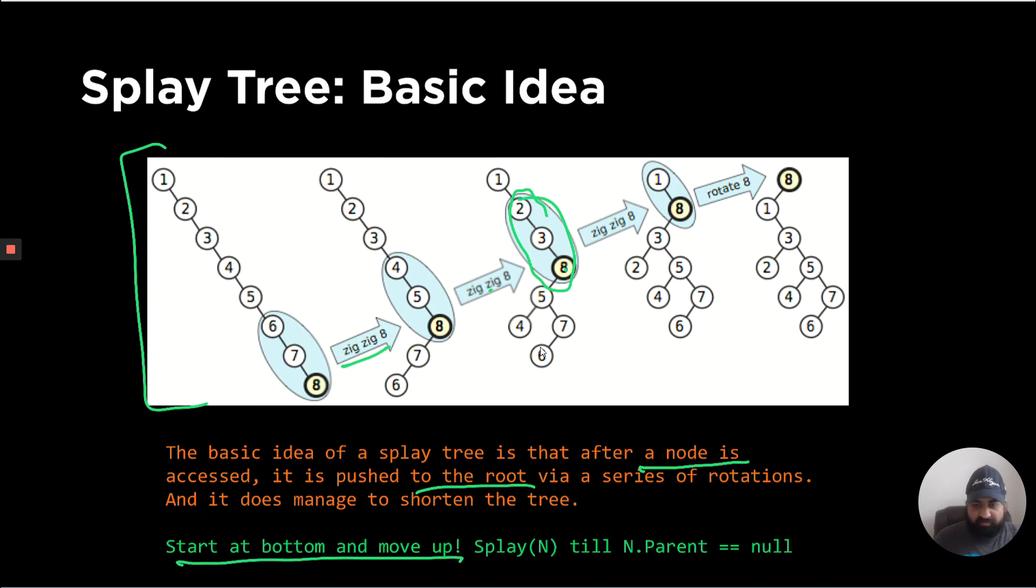And you move further up the tree until you make this 8 as the parent node, which is this operation splay and which we are going to define very soon. So this is repeated on the item you are trying to search till the item that you are trying to search has no parent, which is n.parent becomes null.